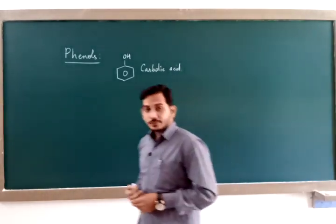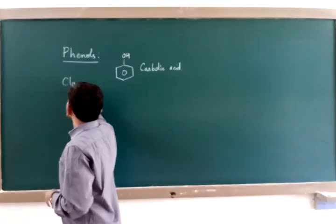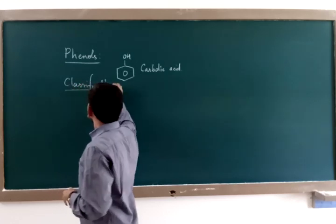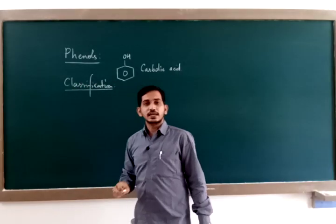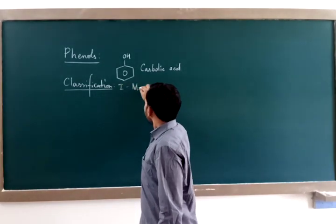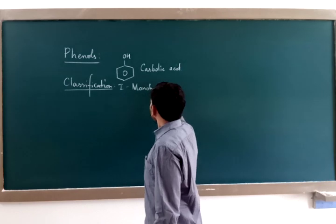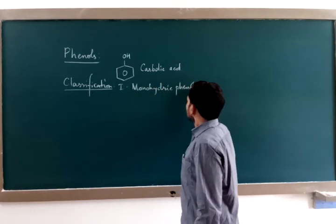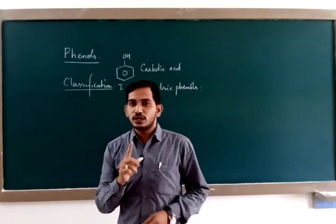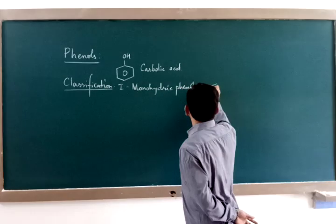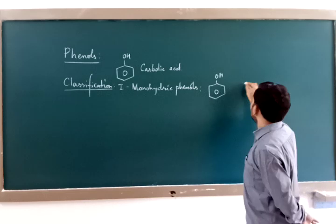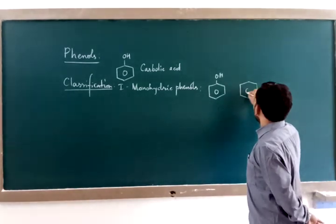Phenols are classified into three types. The first type is monohydric phenols. Monohydric phenols are those which contain only one hydroxyl group attached to the benzene ring.